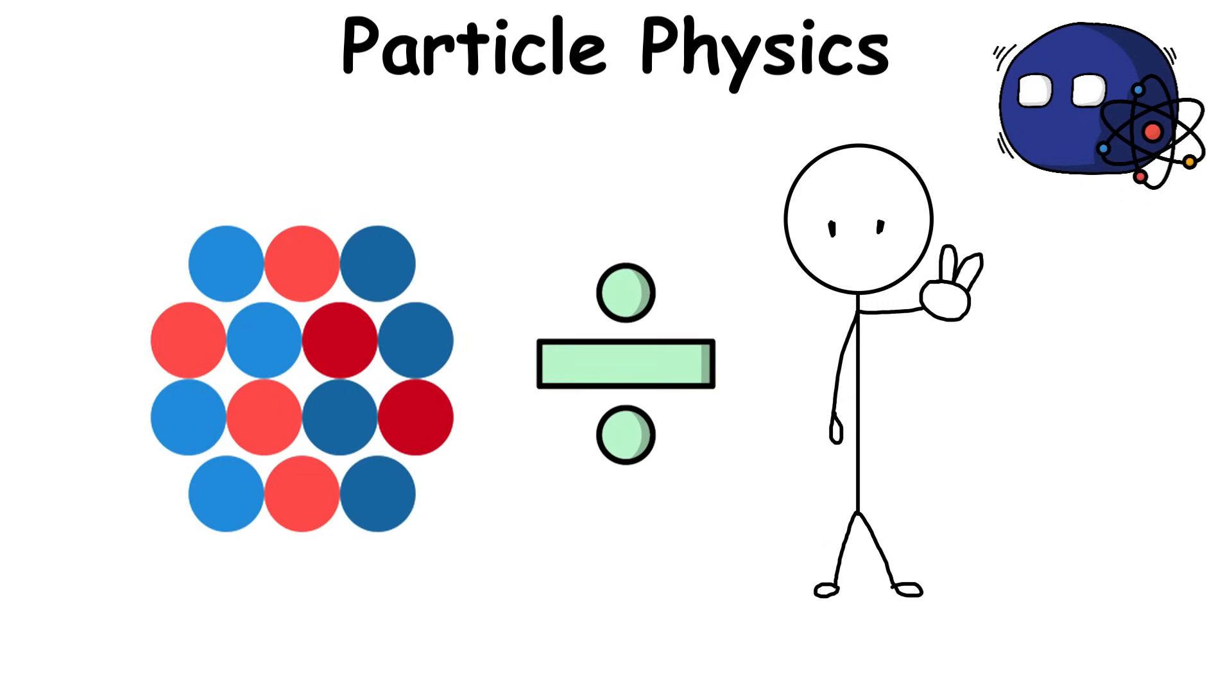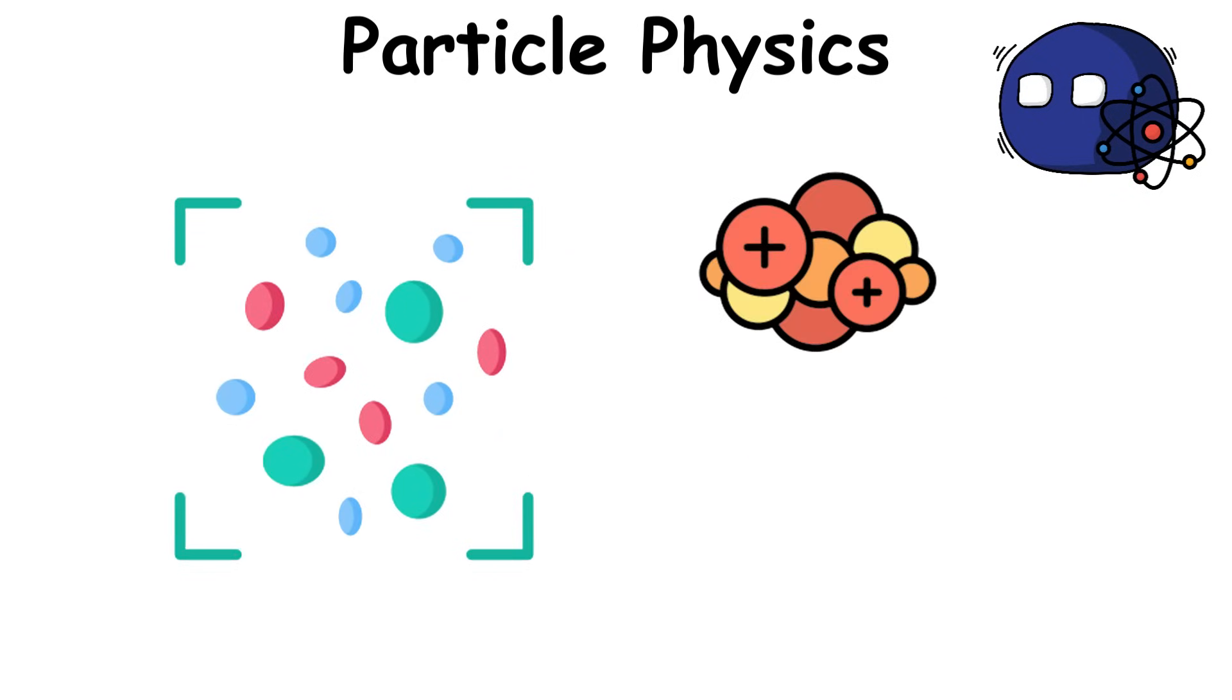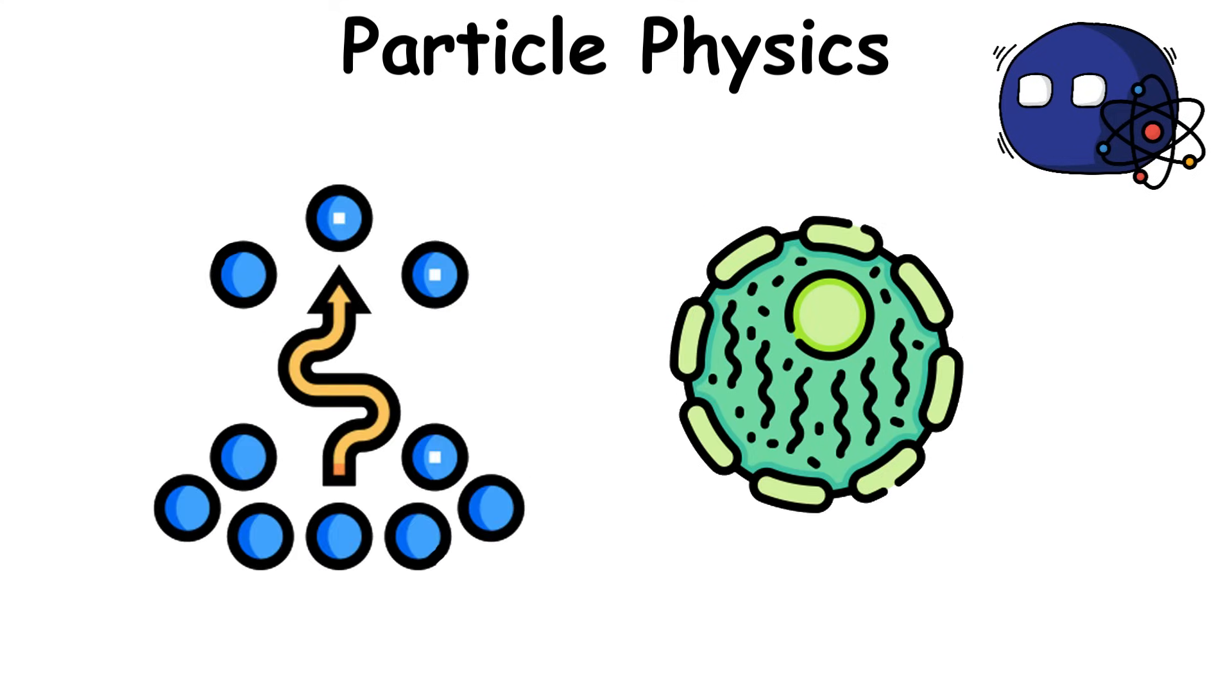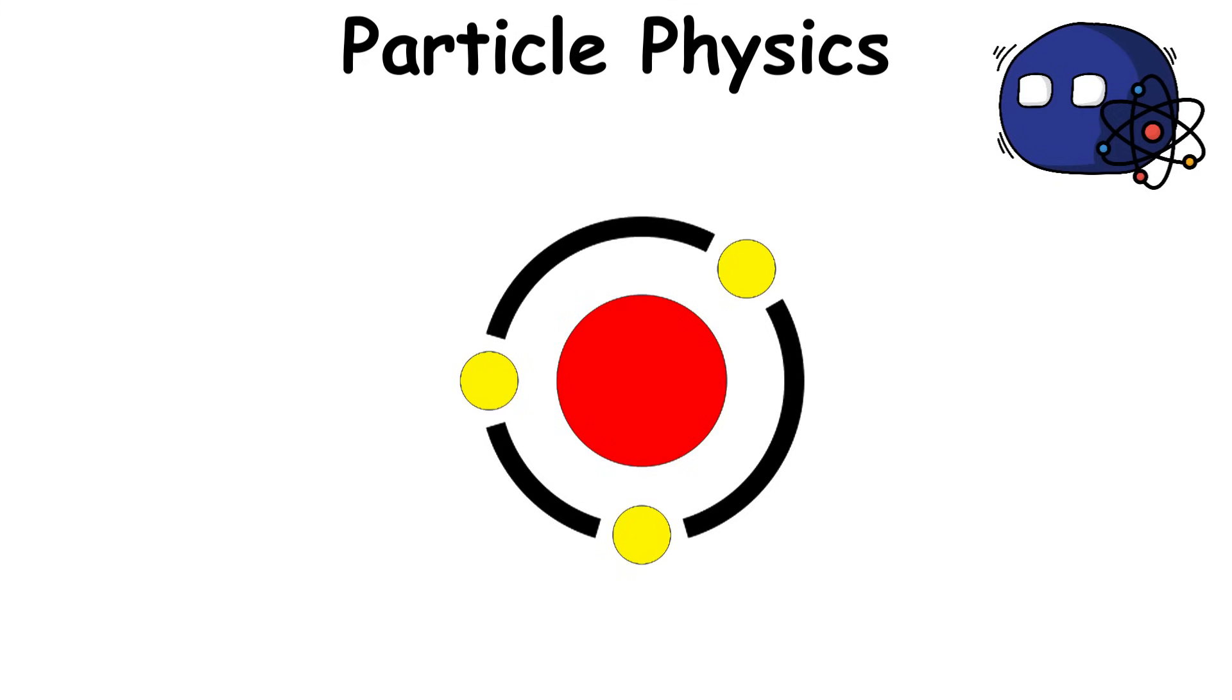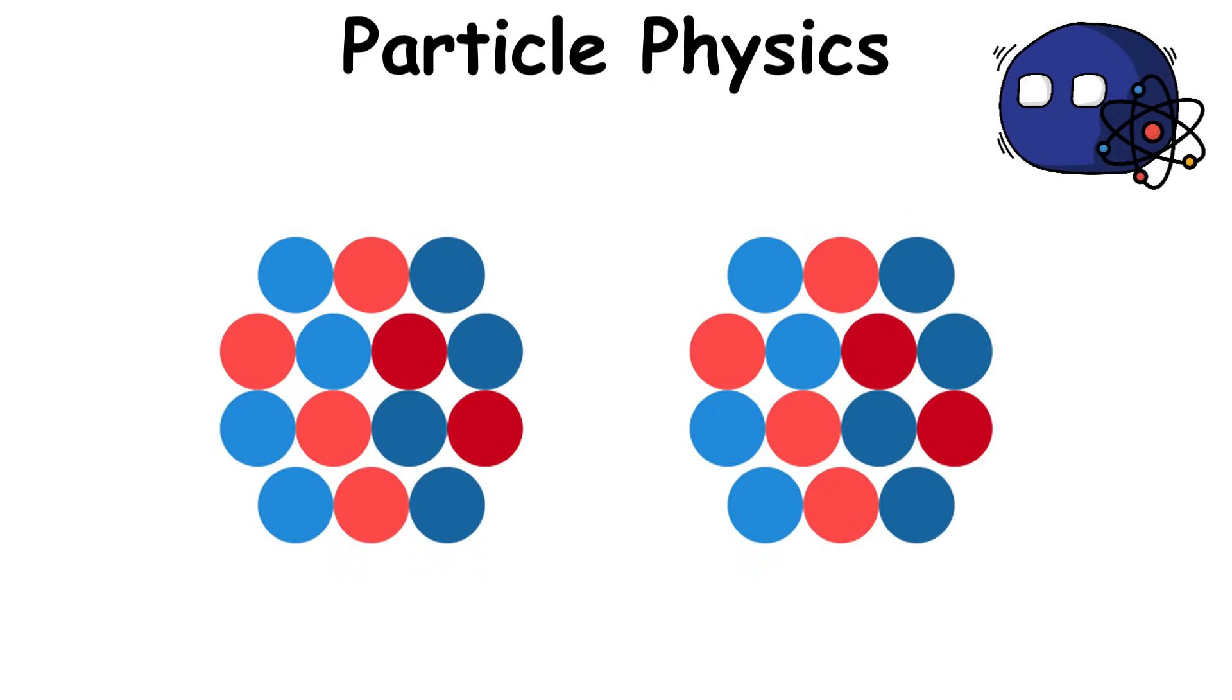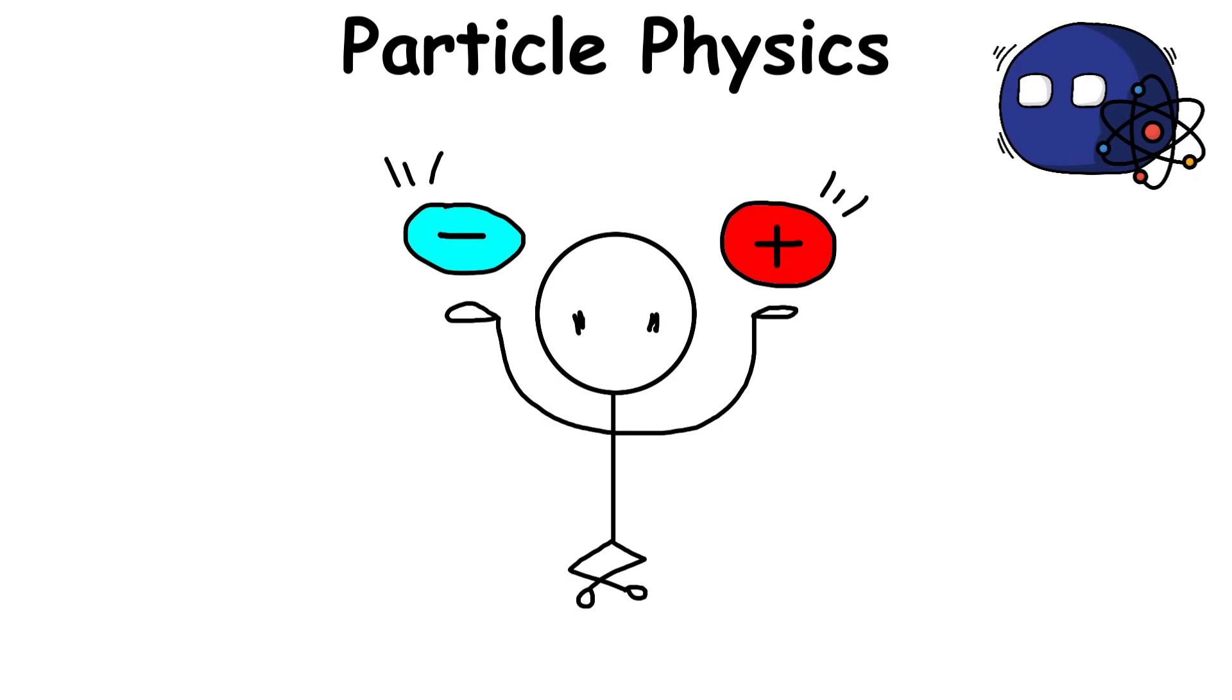Particles are divided into two categories. The quarks are the protons and neutrons, which are at the center of the atom and make up the nucleus. Meanwhile, the leptons are the electrons, which surround the nucleus or core of the atom. These particles interact with one another in different ways, but you can think of them as different types of forces.